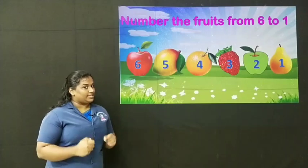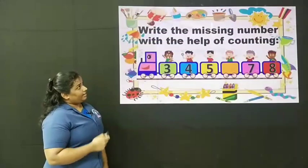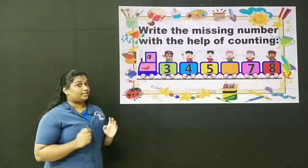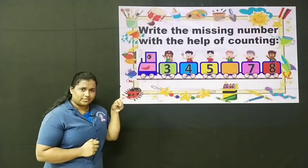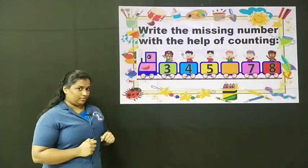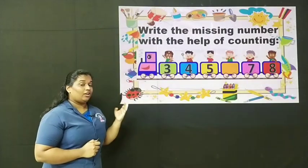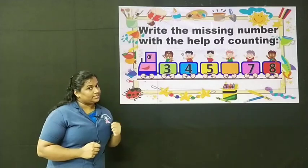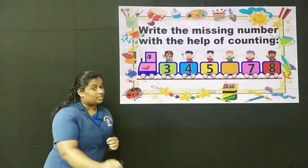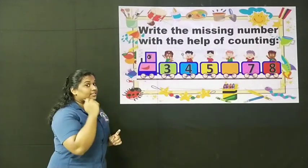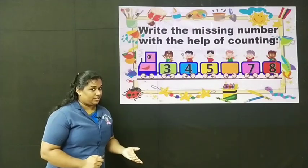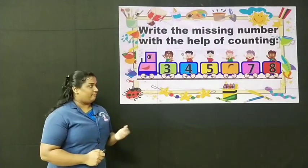Let's solve one more exercise. Write the missing numbers with the help of counting. Here they have given a number train and one number is missing — we have to find that missing number by counting. Count forward from 3: 3, 4, 5 — then the missing number is 6. Very good.